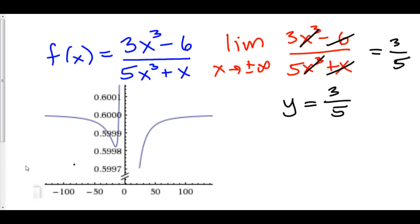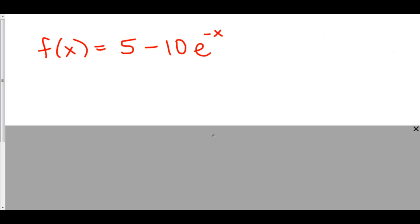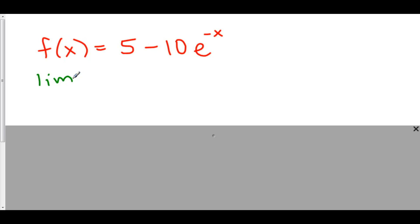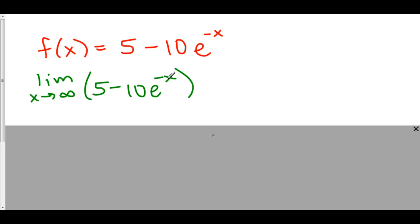Let's take a look at yet another example. Here we have f of x equals 5 minus 10e to the negative x. This one we might have some difficulty with because we have two things going on: one that happens when we go to positive infinity, and one that happens when we go to negative infinity. Let's take both limits independently, starting with positive infinity. We have 5 minus 10e to the negative x. As x goes to positive infinity, that's 1 over e to the infinity, which approaches 0 because the denominator gets very large. So this fraction goes to 0, times negative 10 is still 0, and we have 5 minus 0, which is 5. So as we approach infinity, our horizontal asymptote is y equals 5.